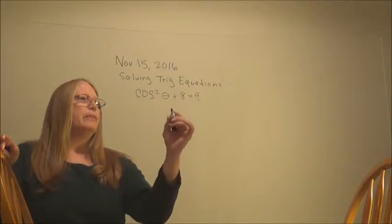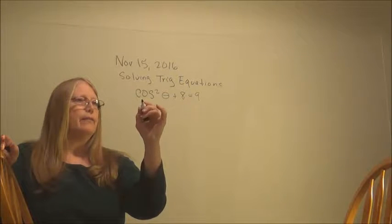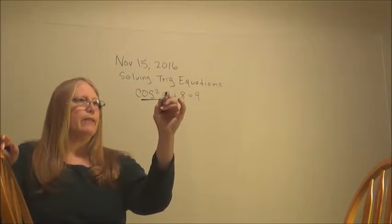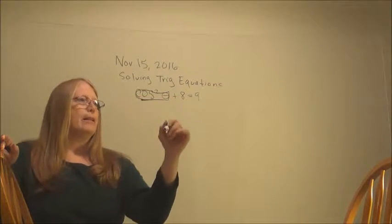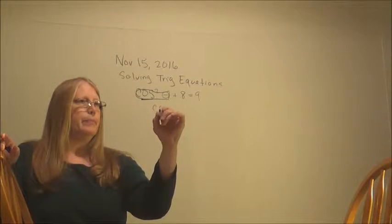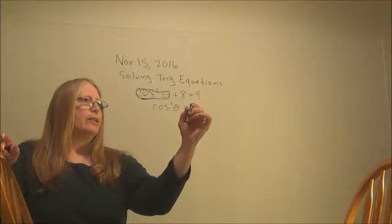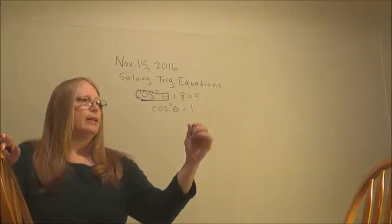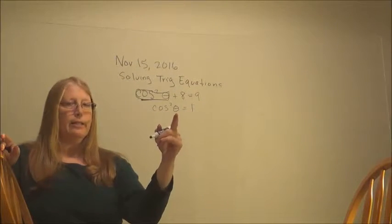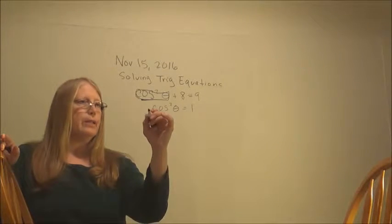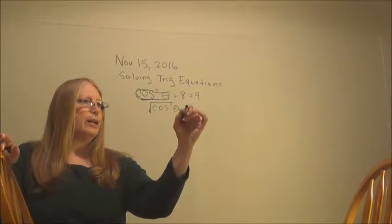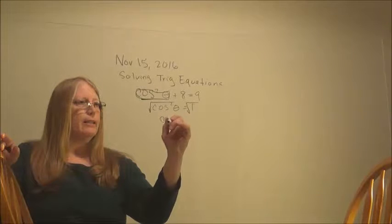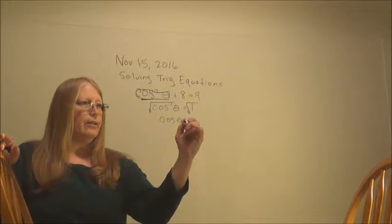And in this one, we're going to solve and get cosine of theta by itself. So I'm going to move the 8 over by subtraction. So the 9 minus 8 will become a 1. And then I want cosine instead of cosine squared, so I'm going to take the square root of both sides. When I do that, I get the desired cosine theta on the left.